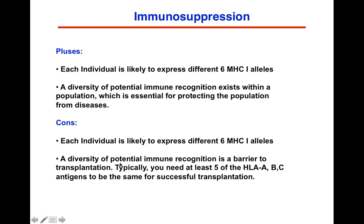This leads us to immune suppression. Each individual has six different HLA class I alleles, and there's a diversity of potential immune recognition within a population, which is essential for protecting that population from diseases. A highly diverse population will have a lesser chance of succumbing to potential infectious diseases.